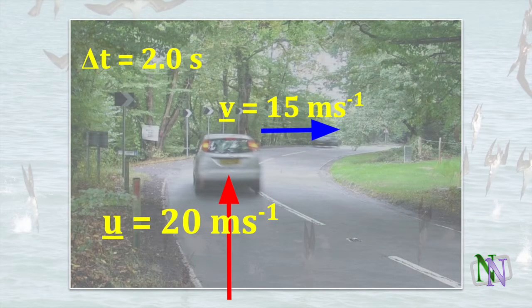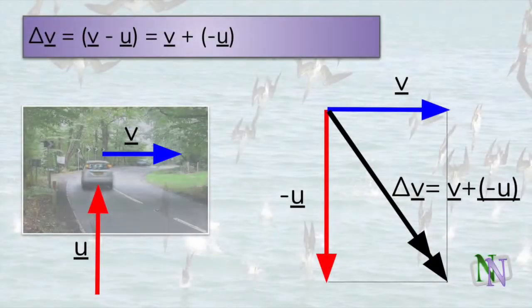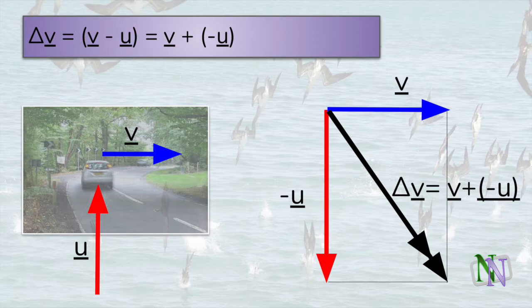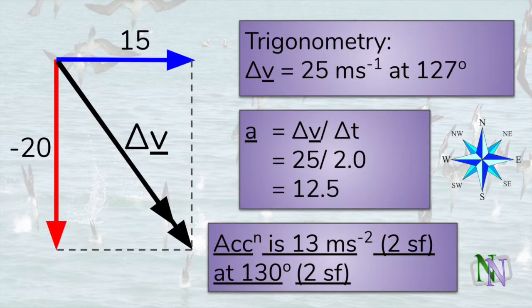Here is another example. A car is traveling north at 20 meters per second and turns a corner in 2 seconds to travel at 15 meters per second due east. The change in velocity is calculated with vectors — the final velocity minus the initial velocity — shown in the vector diagram as v minus u. The black arrow is the change in velocity in magnitude and direction. Using trigonometry, the change in velocity is 25 meters per second at 127 degrees from north, which is then substituted into the acceleration formula.